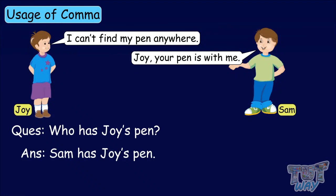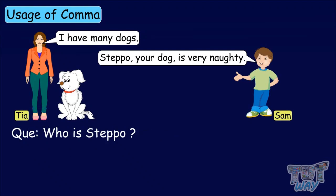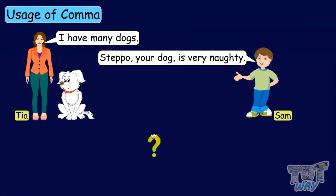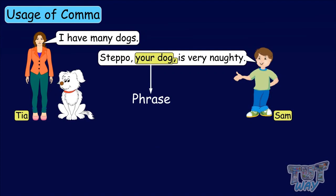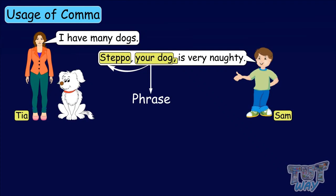Now here we have another conversation. I have many dogs. Stepo, your dog, is very naughty. Whose dog is Stepo? It is Tia's dog. Who is Stepo? Stepo is the name of a dog. How can we say that Stepo is a dog? It is because of the second comma in the sentence after the phrase 'your dog.' Your dog is a phrase that explains the naming word Stepo. So: Stepo, your dog, is very naughty — it means Stepo is the name of the dog.